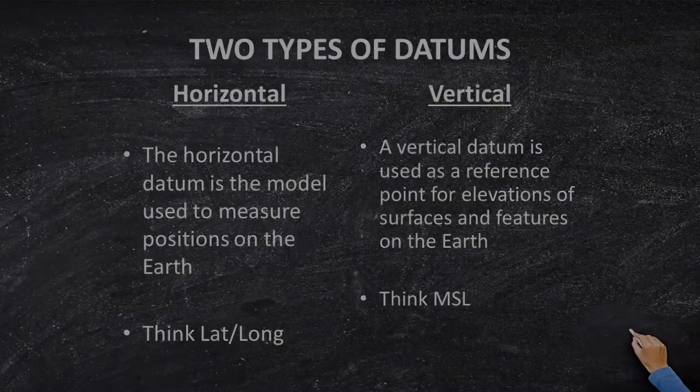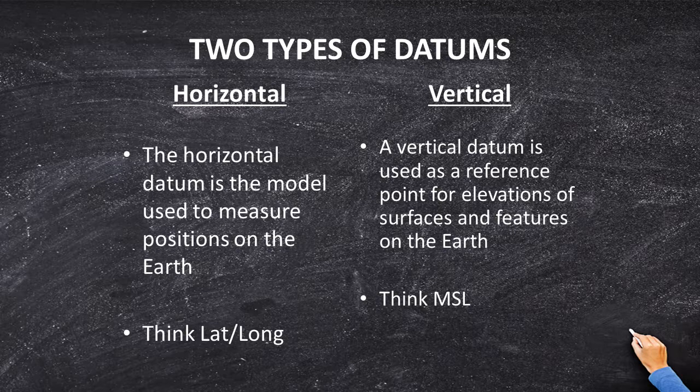There are two types of datums. Horizontal datums, which measure different positions on the Earth — think latitude, longitude. And then there are vertical datums. The vertical datum measures a height or an elevation above a certain point. That could be height above mean sea level, height above the center of the Earth, height above Mount Everest — whatever you'd like to use. Make sure you appreciate the difference between horizontal and vertical datums.